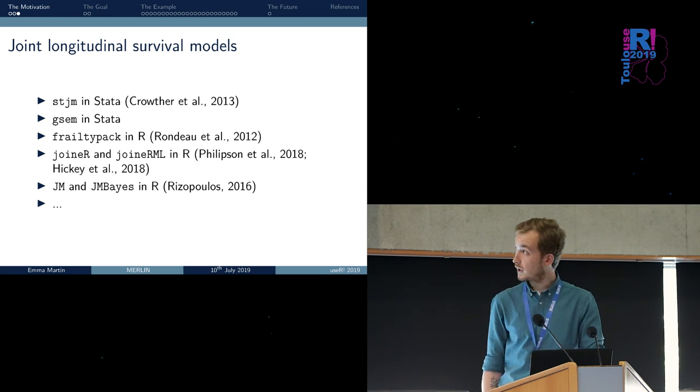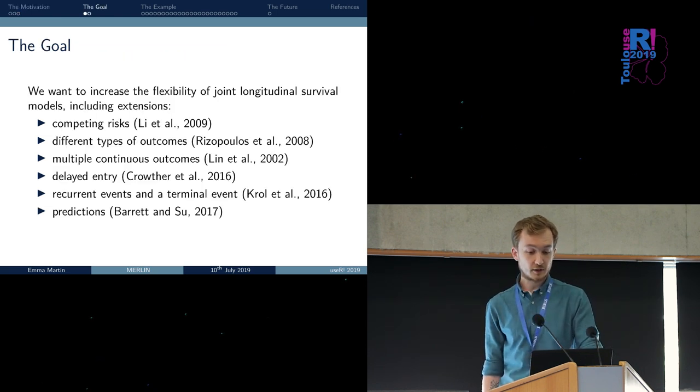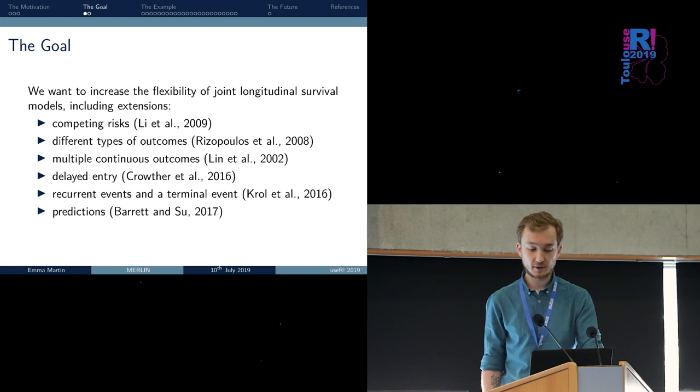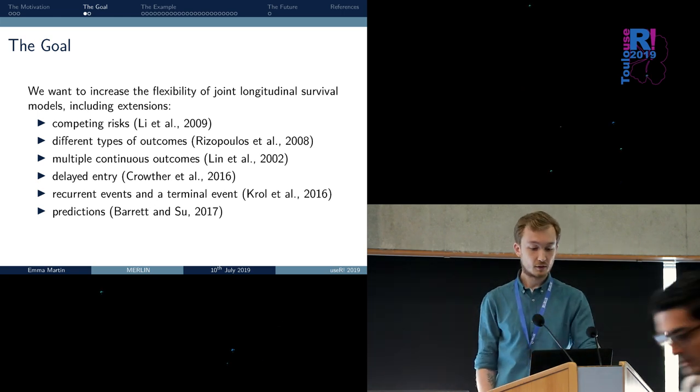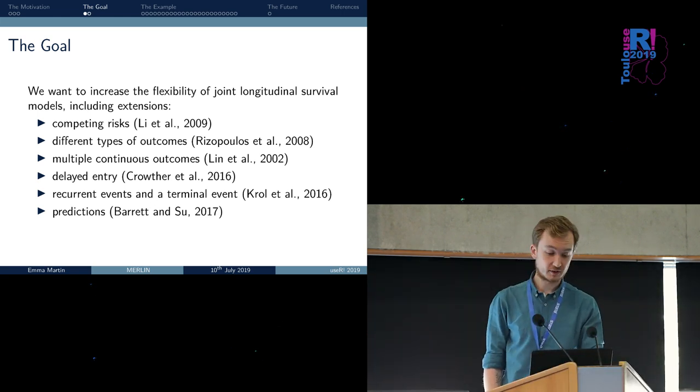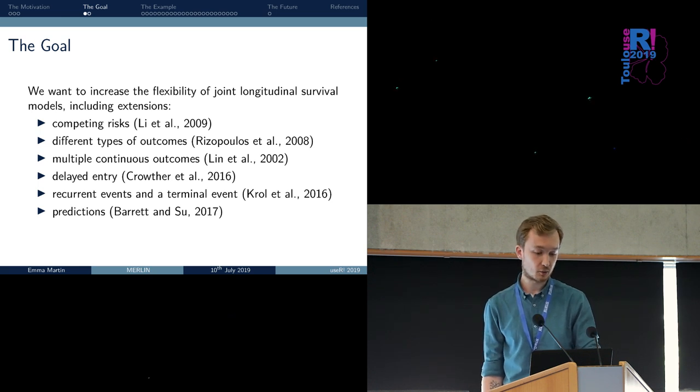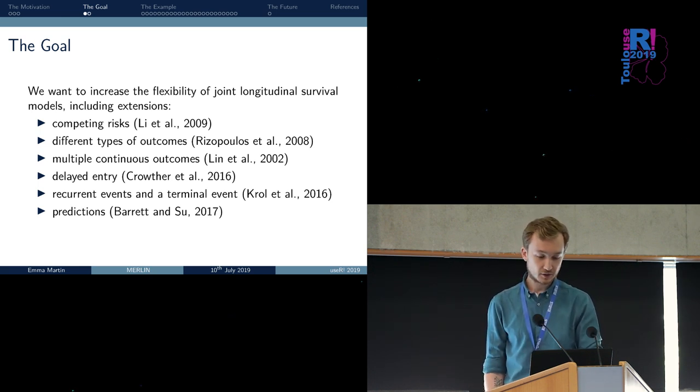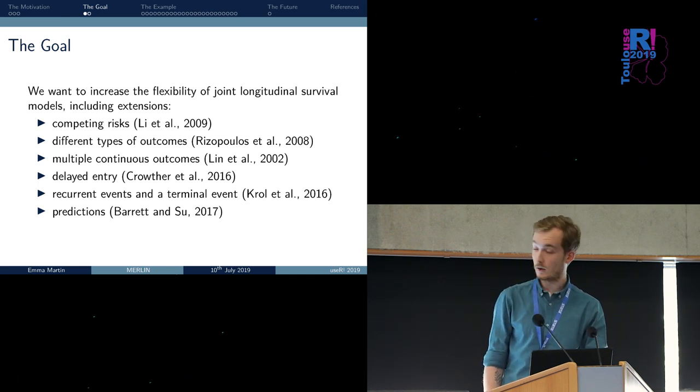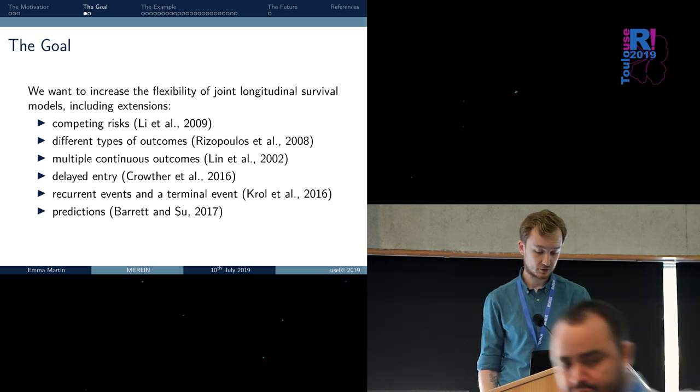What we want to do with Merlin is to incorporate several extensions to this framework that have been suggested in the literature. For instance, in the past years, this framework has been extended to accommodate competing risks, different types of outcomes, multiple continuous outcomes, delayed entry, recurrent events and terminal events at the same time, and loads of clinically meaningful predictions.